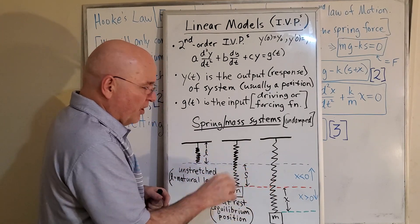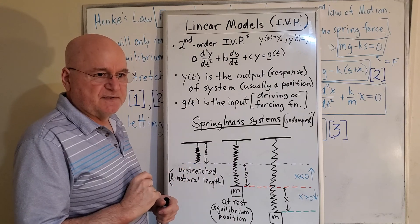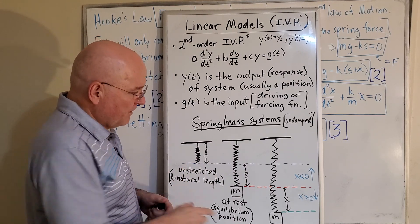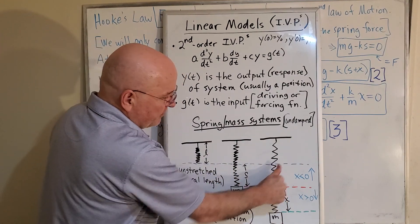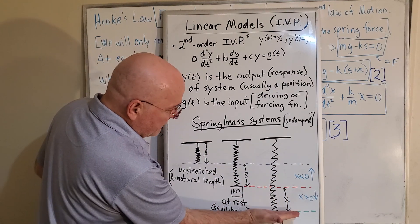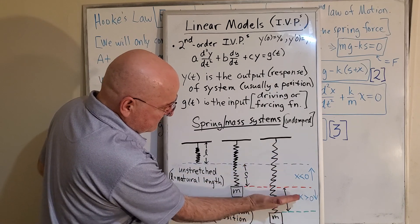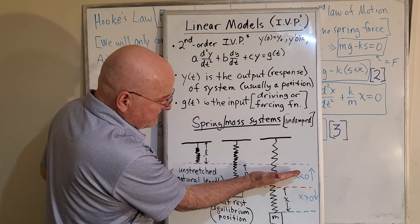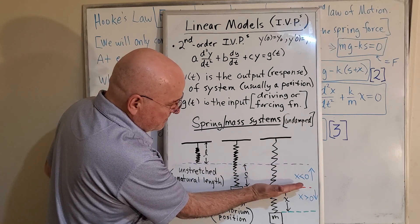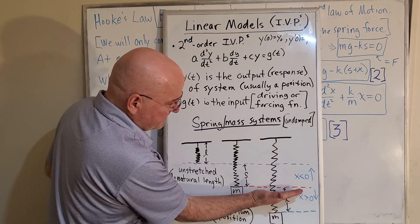So for our purposes, because the textbook does it this way, many textbooks don't, we're going to consider downward to be positive value for X. Upward will be negative. So when at some instant X stops right here, X is zero here. It's negative, zero, positive, zero.